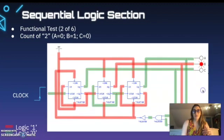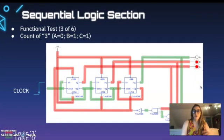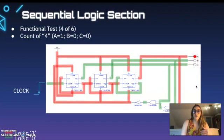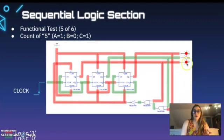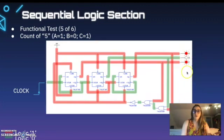We then have a functional test for two, so that would mean that A is zero, B is one, C is zero. You can see the red traveling to light up the B indicator. We then have three where B and C are both lit. Four is just A so that's 100. Then we have 101 so A and C are lit. A and B, so 110, which gives us our six.